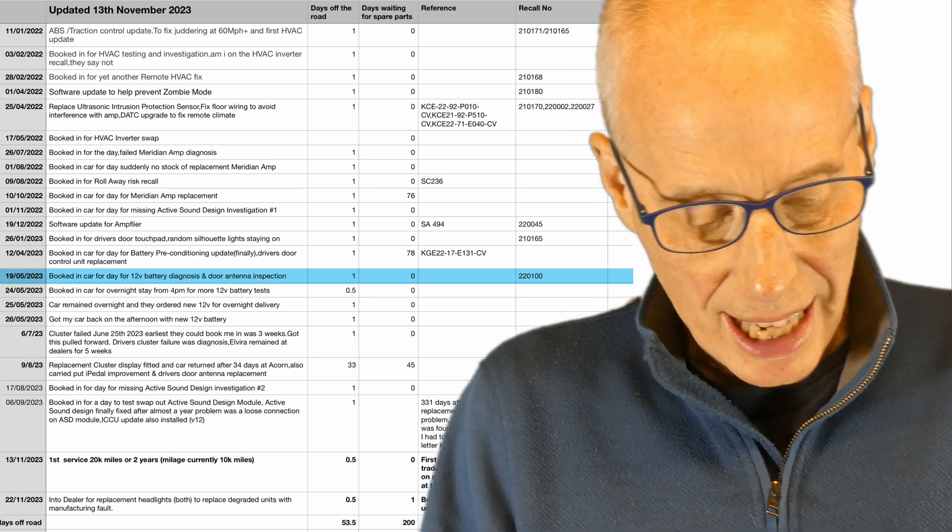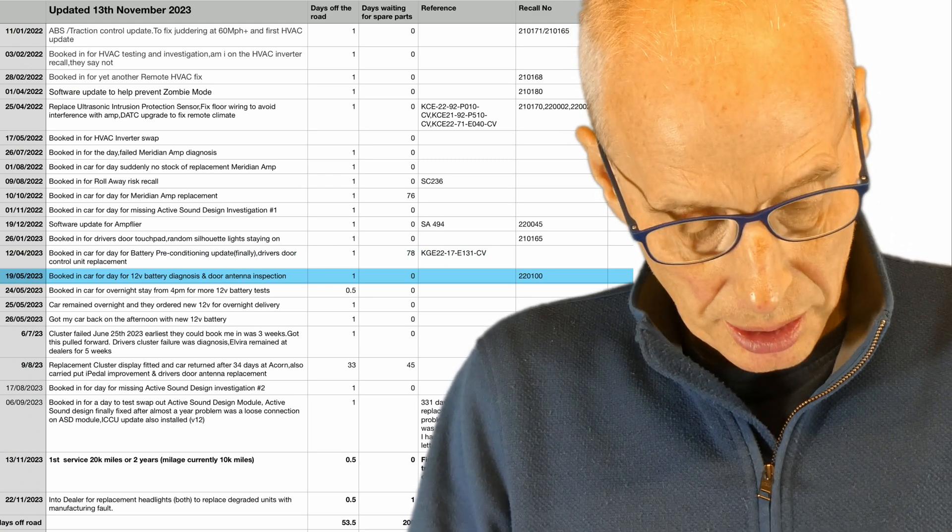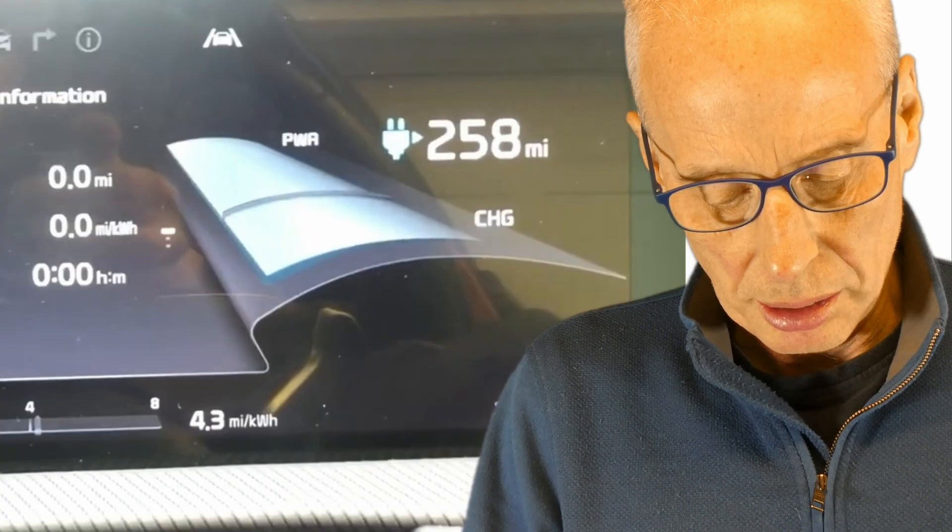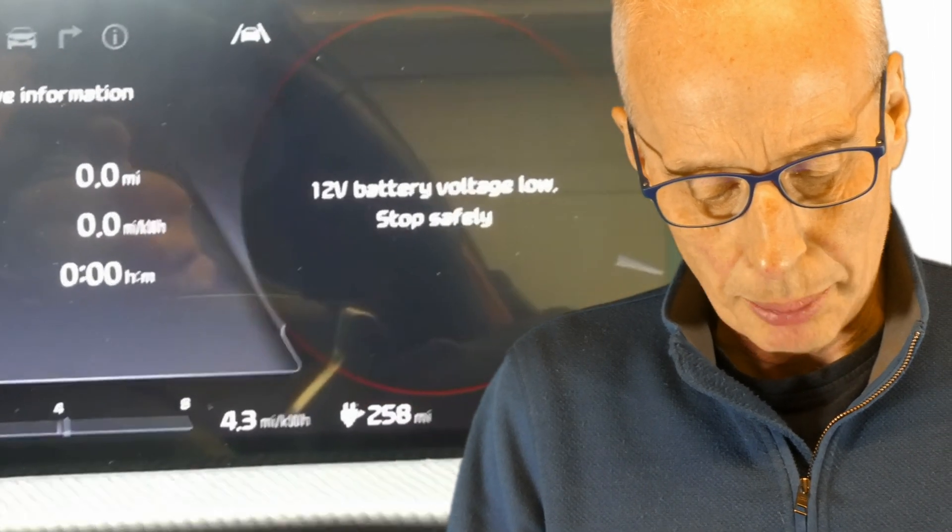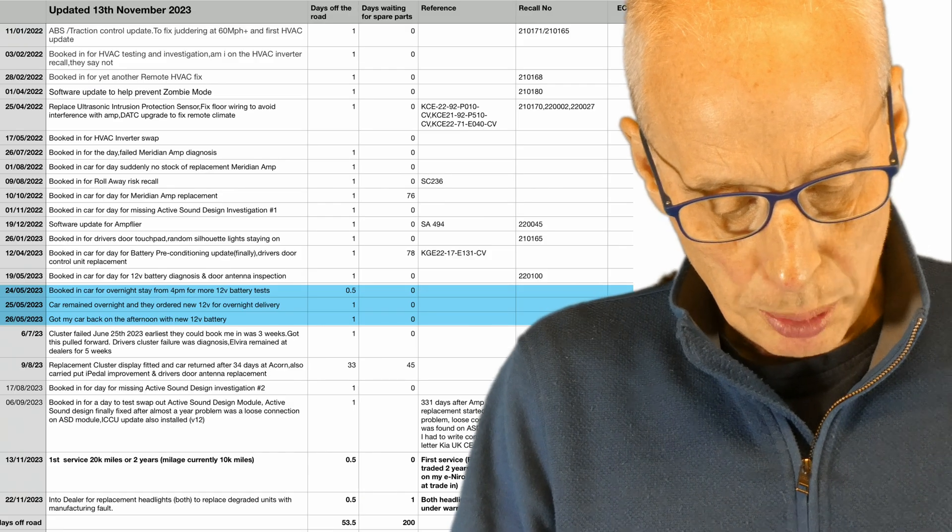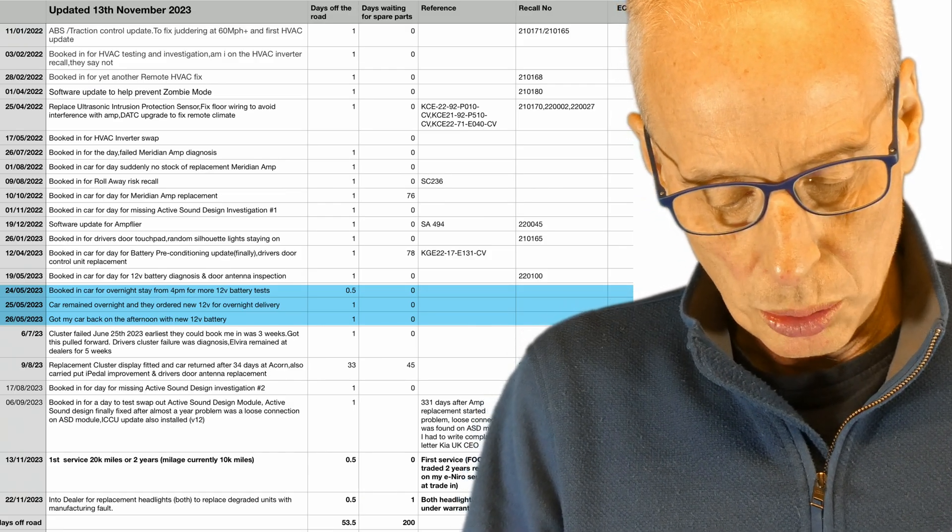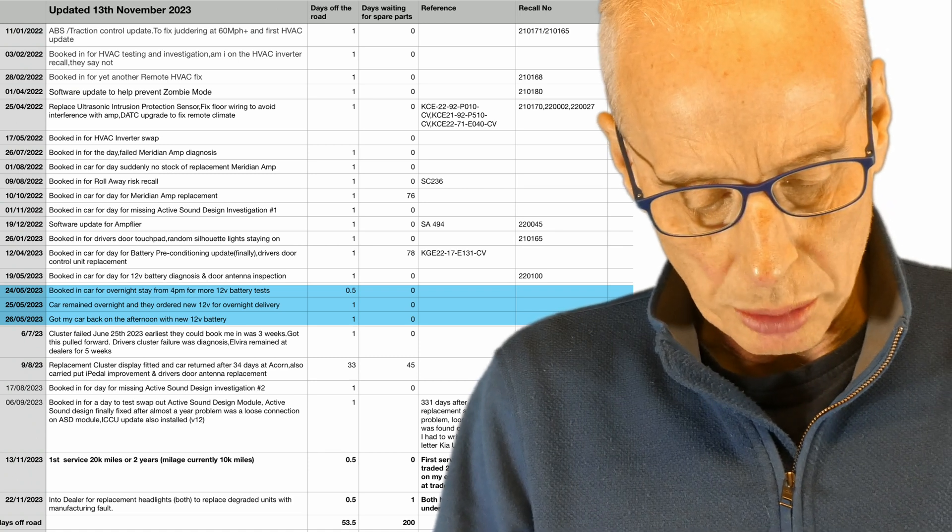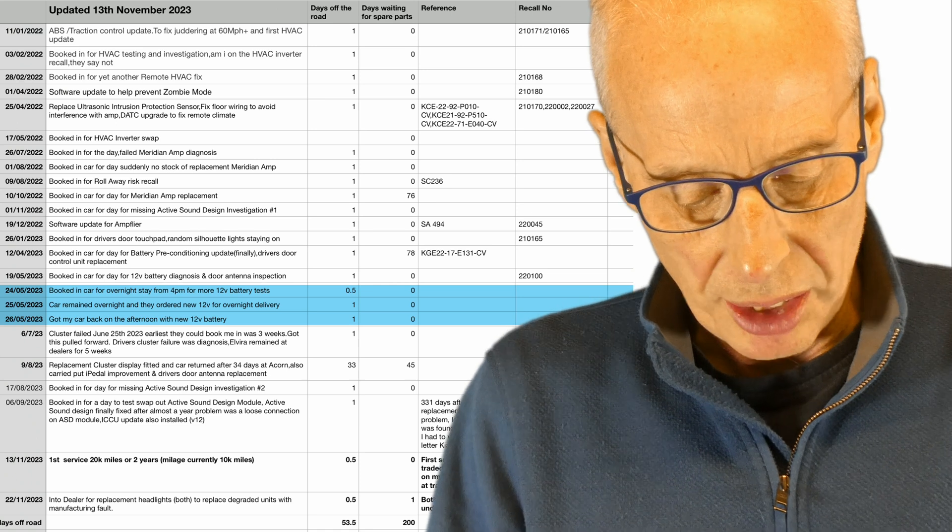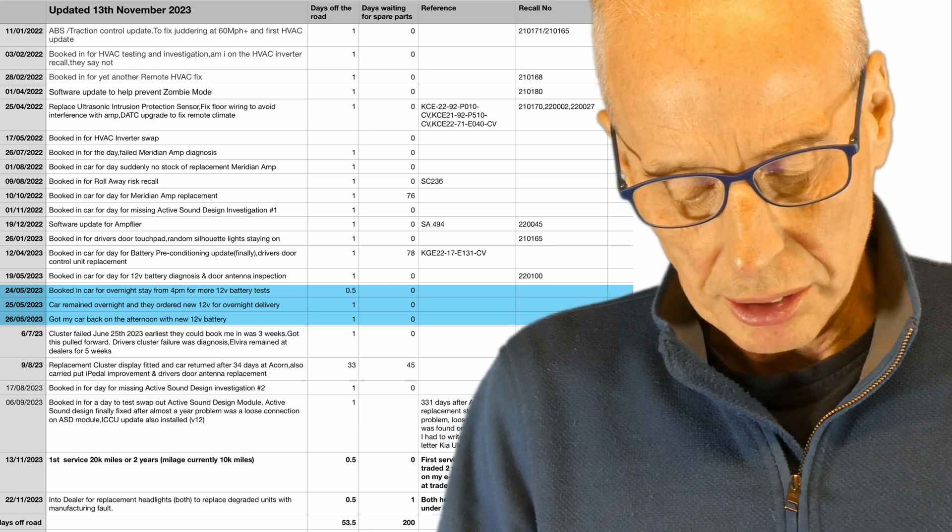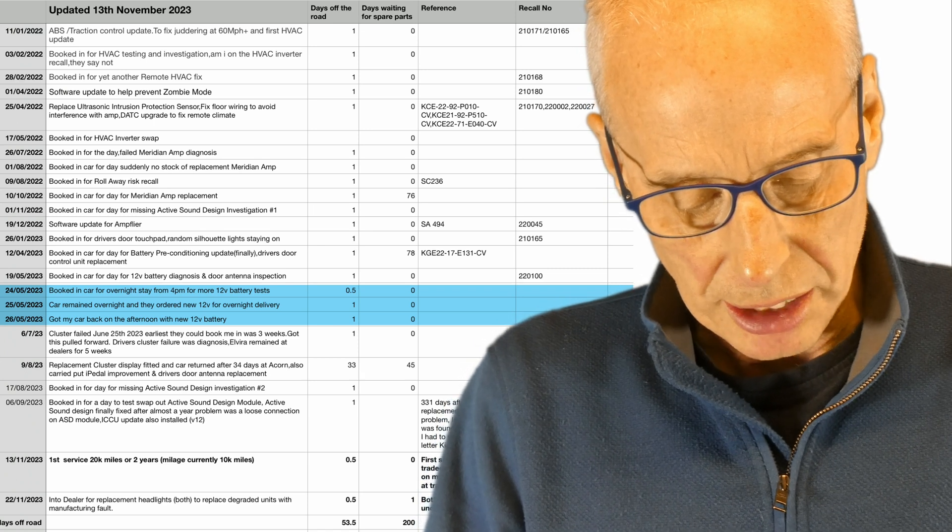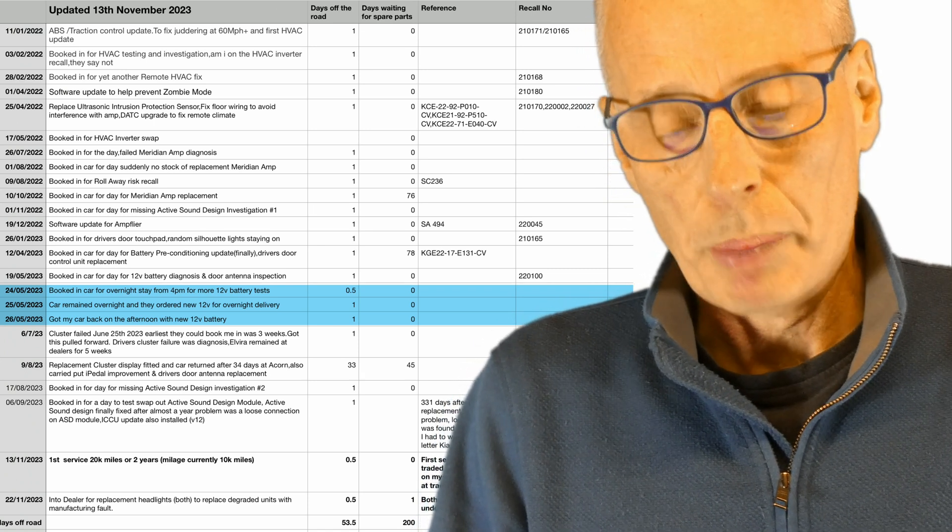Shortly after that I started getting 12 volt battery problems, so 19th of the 5/23 is booked in for a day for 12 watt battery diagnosis and door antenna inspection. 24th of the 5/23 is booked in for overnight stay from 4pm overnight for the 12 watt battery test and then they agreed to order a 12 watt battery. So I got my car back on the 26th of the 5/23 with a new 12 watt battery under warranty.